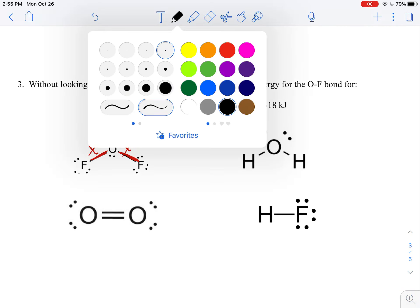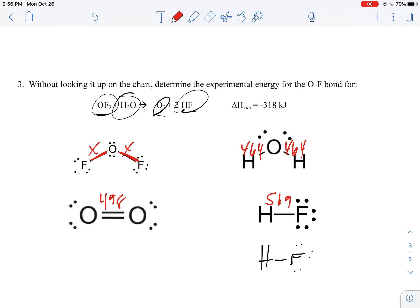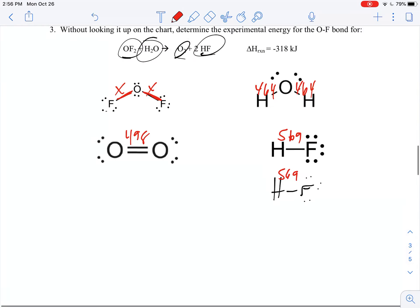And don't forget that there are going to be two HFs, so if you look that up on your chart that's 569, but it's 569 twice. And then all in all it equals negative 318 here, so this is going to be 2X.